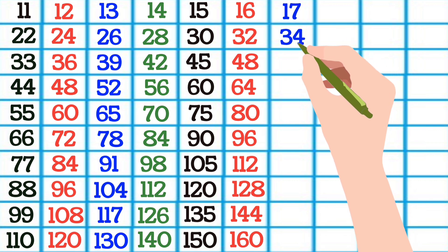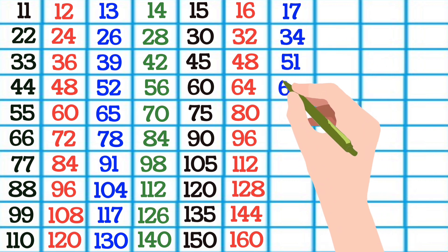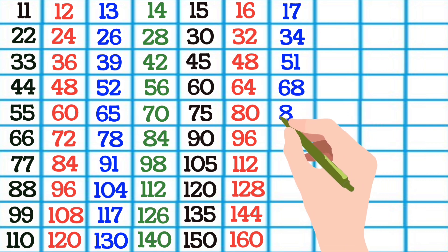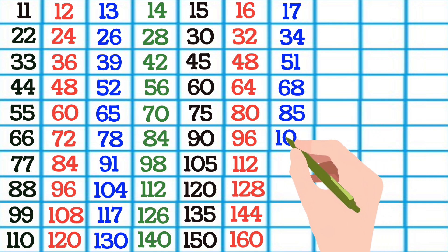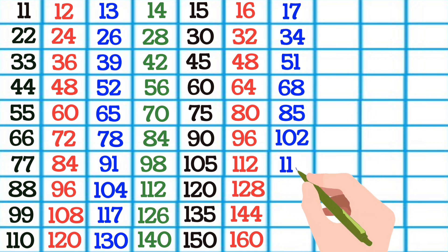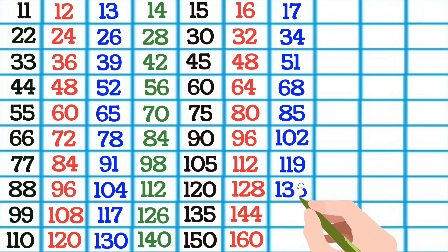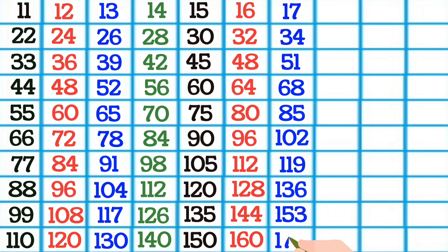17 1s are 17, 17 2s are 34, 17 3s are 51, 17 4s are 68, 17 5s are 85, 17 6s are 102, 17 7s are 119, 17 8s are 136, 17 9s are 153, 17 10s are 170.